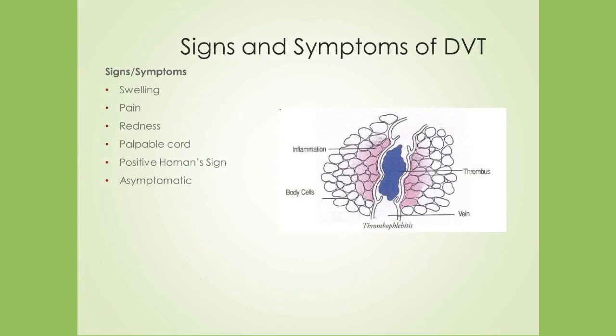The most common signs of DVT are unilateral swelling, redness, and pain. Swelling occurs distal to the thrombus, with redness and pain at the site. Pain may extend over the course of the vein due to inflammation. A palpable, tender cord may form along the vein. A positive Homans sign — pain in the upper calf during forced dorsiflexion — may be present, though the test is insensitive and nonspecific, producing many false negatives and is not reliable for diagnosis. Some patients will present with DVT who have no signs or symptoms, related to partial obstruction or collateral vessel development.